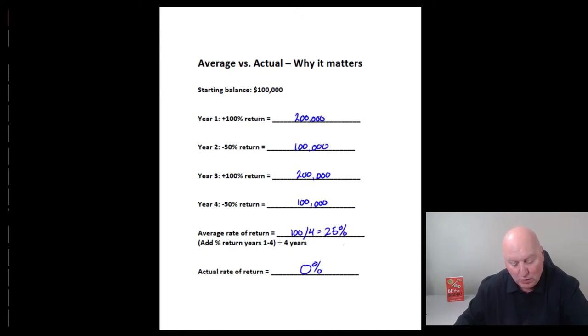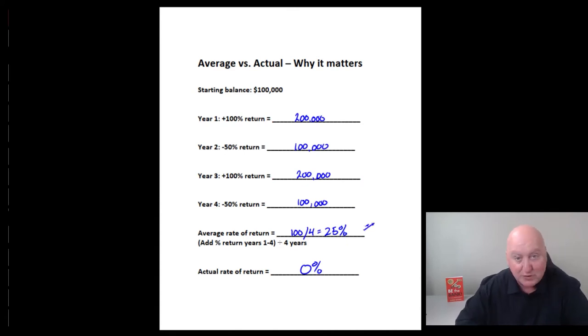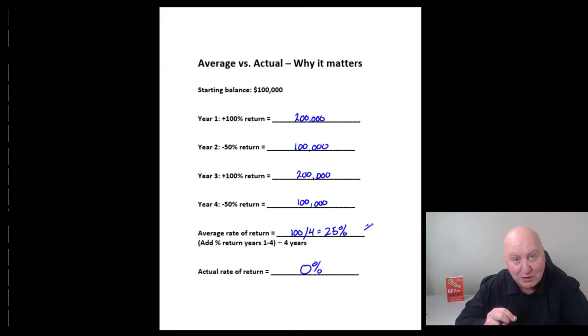So your actual return is zero, but your advisor is telling you you had a 25% return. Now, do you care about the average return or do you care about the actual return?